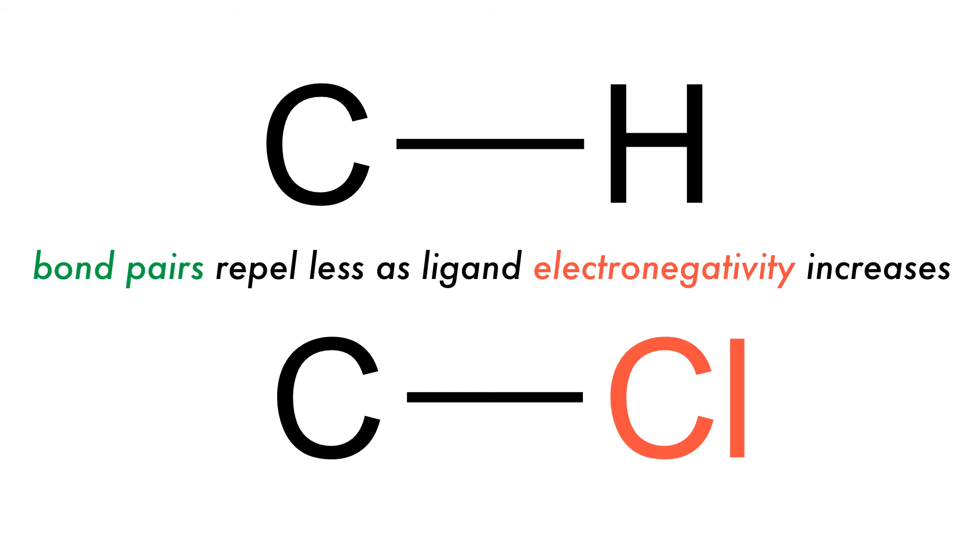The bond angle increases because increasing the electronegativity of the ligand from hydrogen to chlorine decreases the size of a bonding pair domain, causing it to occupy less space in the valence shell of the central atom, in this case carbon, thus decreasing the bonding angles.